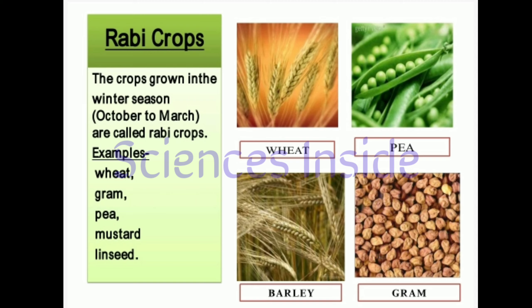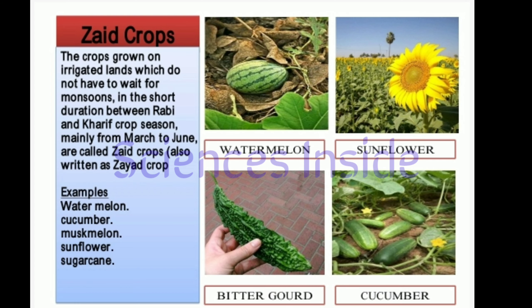Rabi crops are grown between October and April. They require less water and hence are grown during the winter season. Examples include wheat, gram, pea, mustard, linseed, and barley.